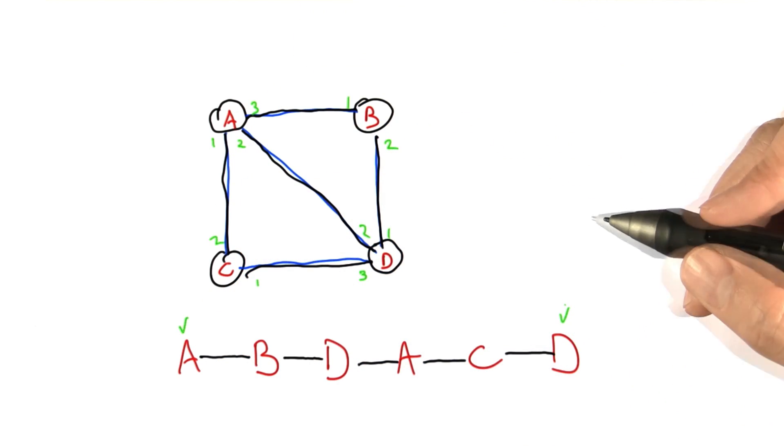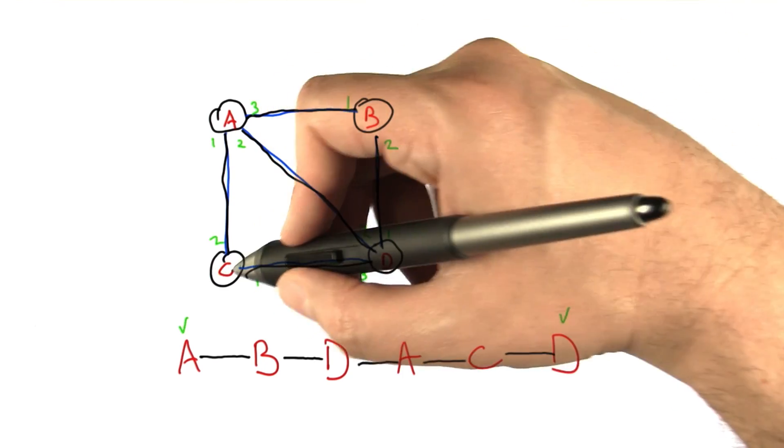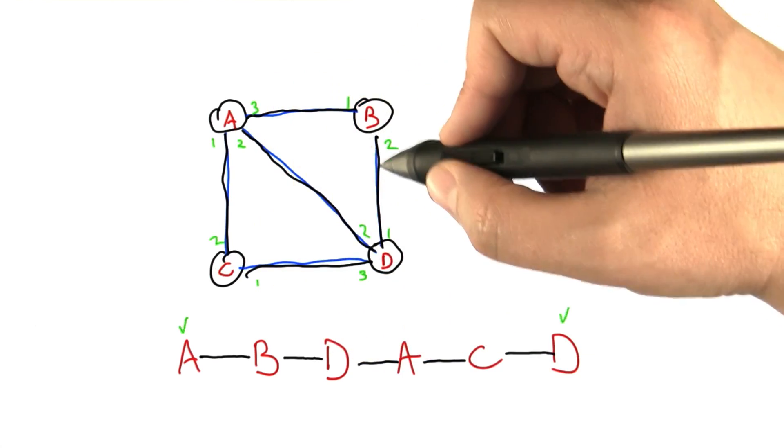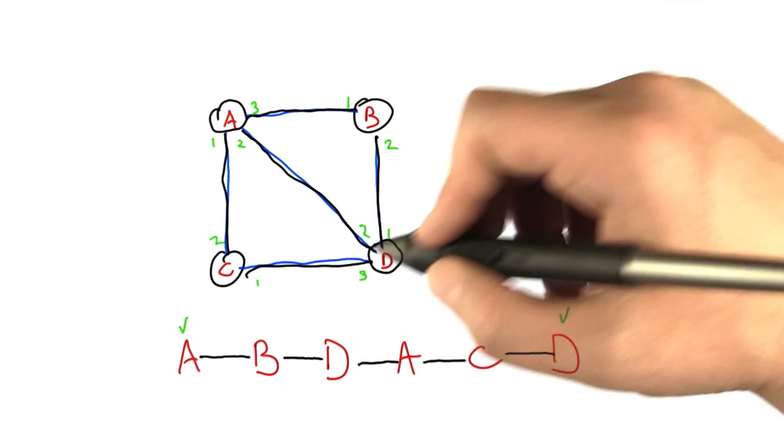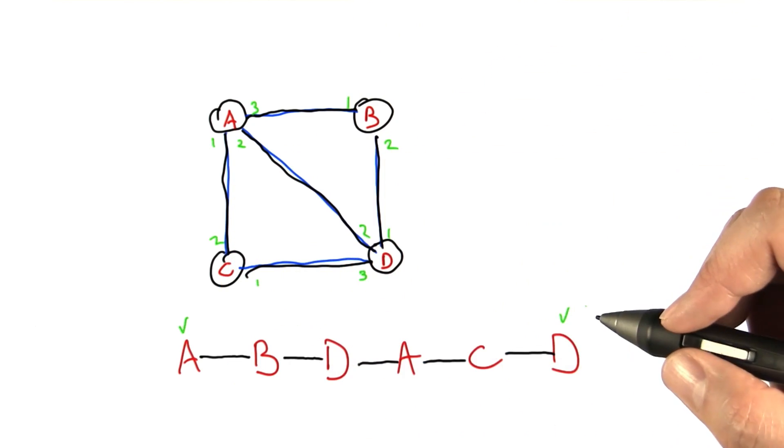Because in addition to any times that the path moves through them and comes out the other side, it either leaves in the beginning or enters at the end without a corresponding other side. So those have to be odd, all the other ones have to be even.